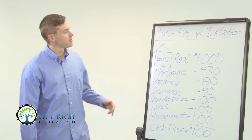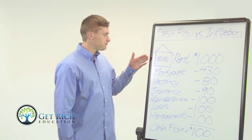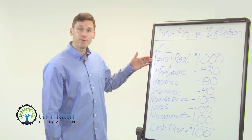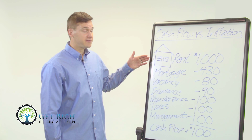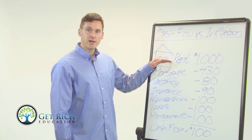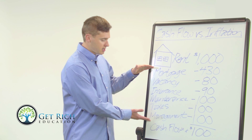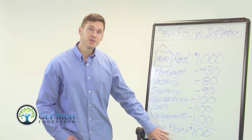To look at an example of how your cash flow beats inflation over time, let's say you buy a $100,000 rental property. You put a 20% down payment on the property and you get a 30-year fixed interest rate loan at a 5% interest rate. So when you buy that rental property, it rents for $1,000 a month — that's what the tenant pays you — and you need to subtract out all of your expenses to get to your bottom line cash flow.